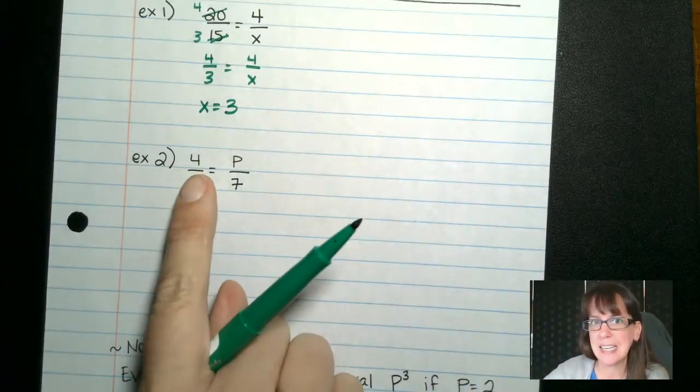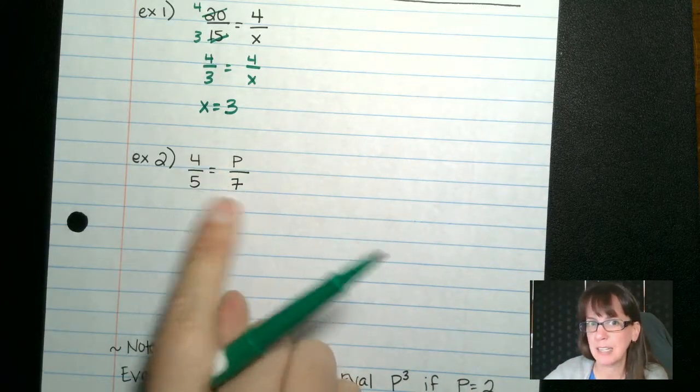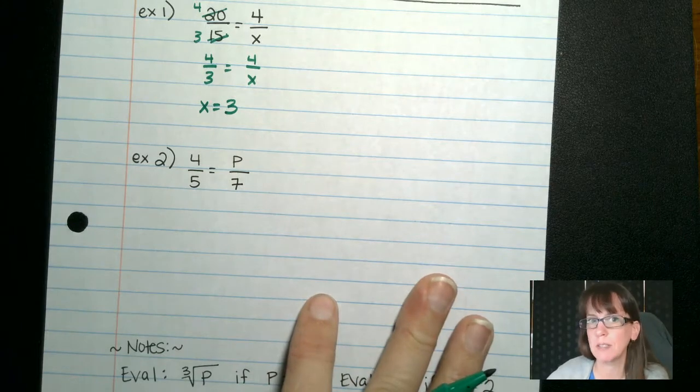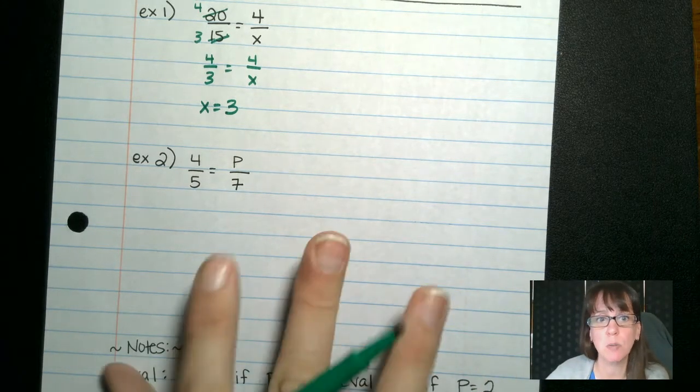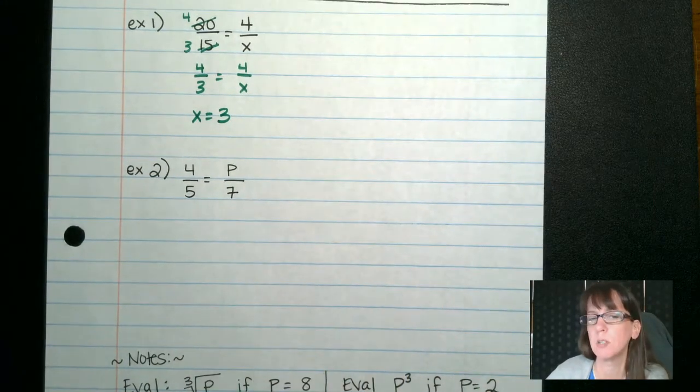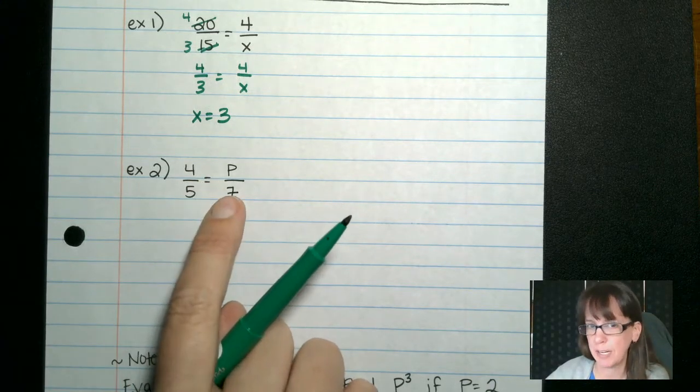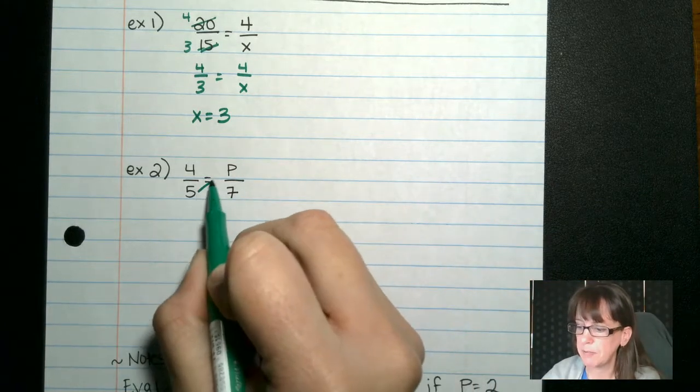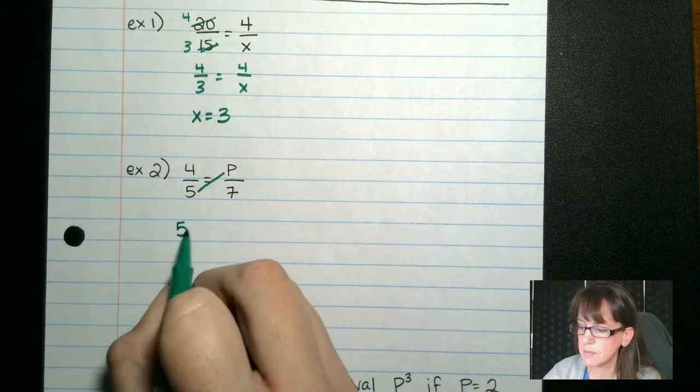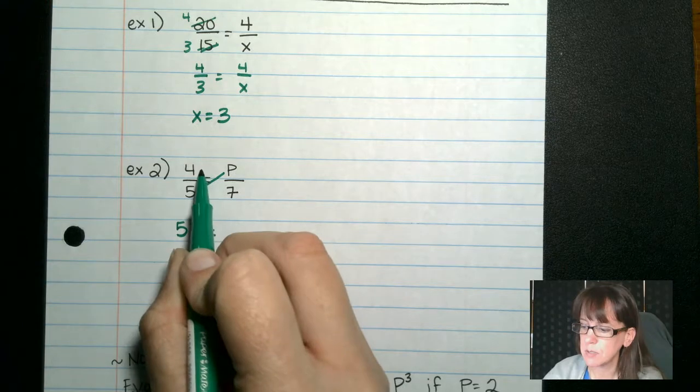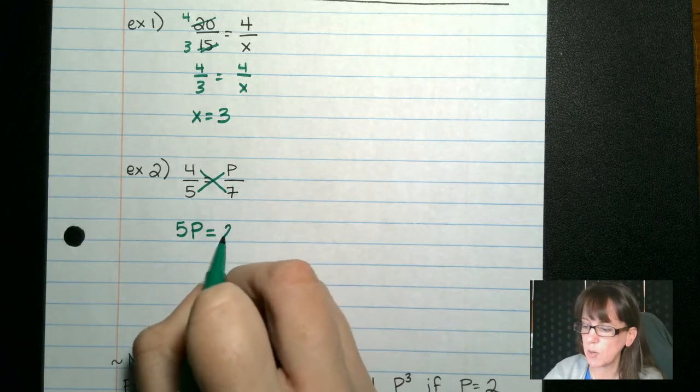In cases like this, I can't easily reduce anything. So what I have to do is cross-multiply. Don't confuse us with cross-canceling. This is cross-multiplying. You do cross-multiply when you have fraction equals fraction. And the way we do that is we say, okay, 5 times p is 5p equals 4 times 7, which is 28.